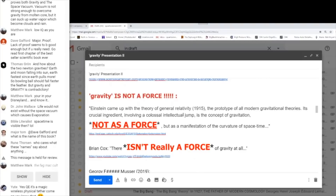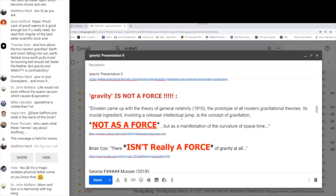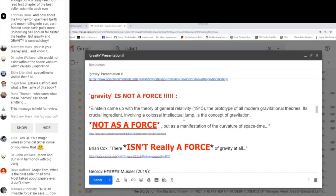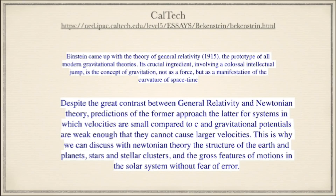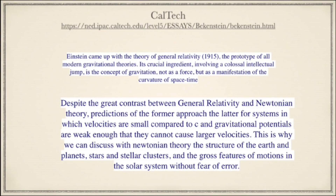Gravity is not a force. From Caltech: Einstein came up with the theory of general relativity in 1915, the prototype of all modern gravitational theories. Its crucial ingredient — involving a colossal intellectual jump — is the concept of gravitation, not as a force, but as a manifestation of the curvature of space-time. Even though Quantum Eraser didn't provide links, I went and actually searched out and found each of these links. Here is his quote from Caltech, and the web address is in the description.